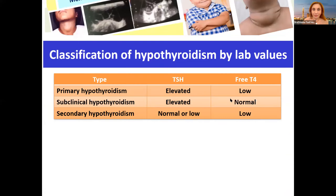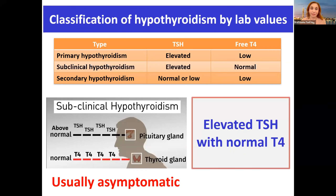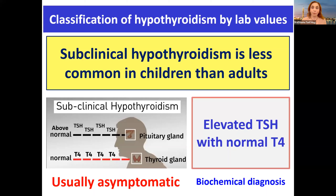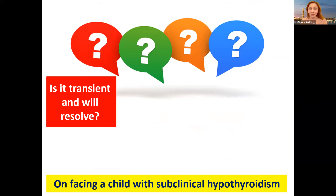As previously mentioned, subclinical hypothyroidism is defined as elevated TSH with normal T4. It's usually asymptomatic, and therefore it is a biochemical diagnosis. Please note that subclinical hypothyroidism is less common in children than adults, and when facing a child with subclinical hypothyroidism, several questions pop up to our minds.